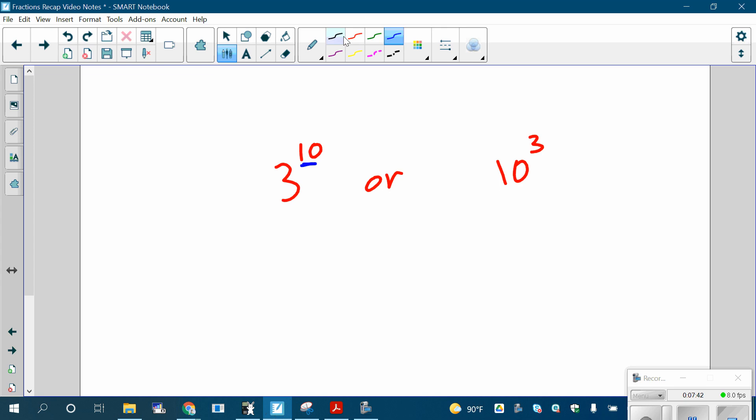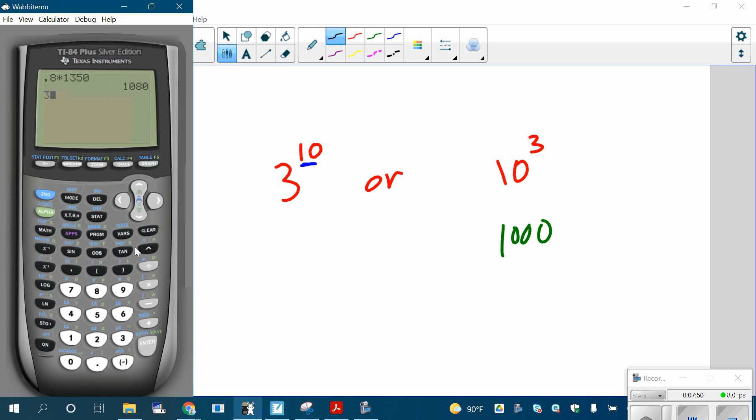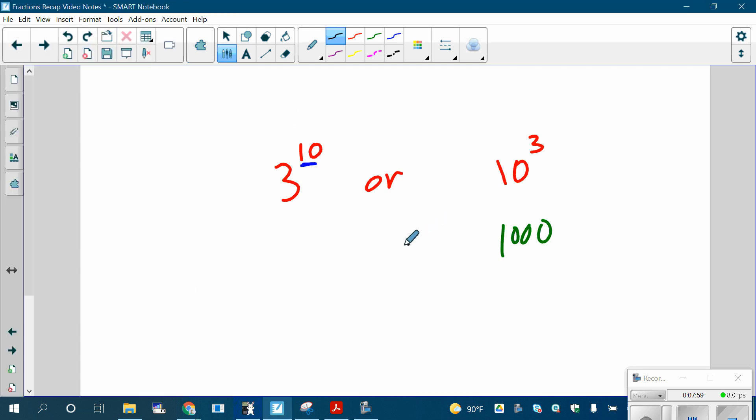If you want to actually test this out, what's 10 to the 3rd? What's just 10 times 10 times 10? That's 1,000. 3 to the 10th, go to your calculator, type in 3 to the 10th power. It's 59,000. So it's way bigger than 1,000. So that's just a good thing to know. Again, there's exceptions. It's not always true. But in general, having a bigger exponent is more important than having a bigger base.